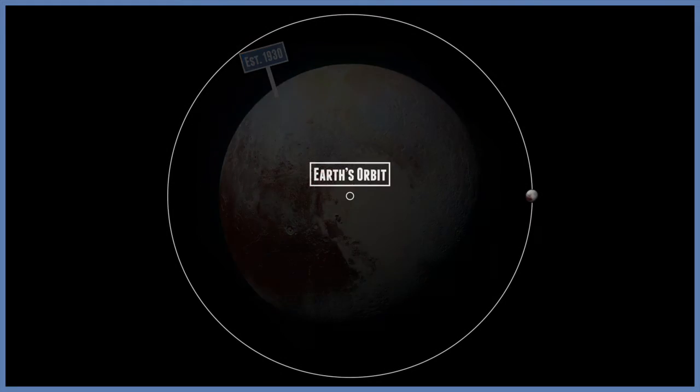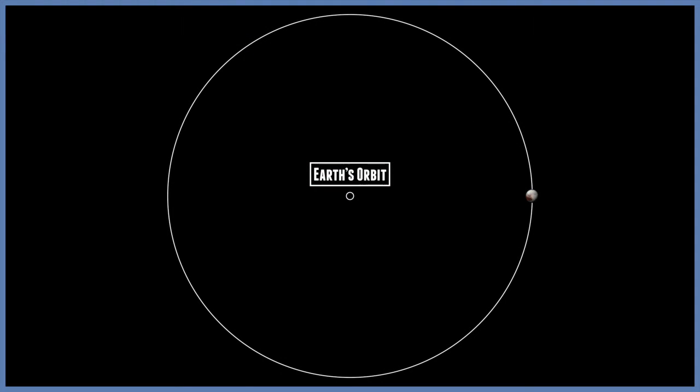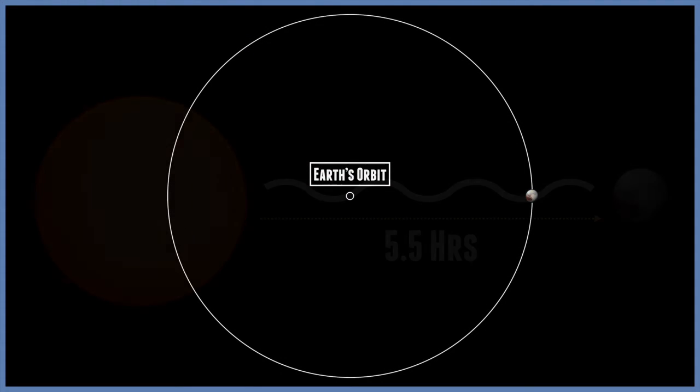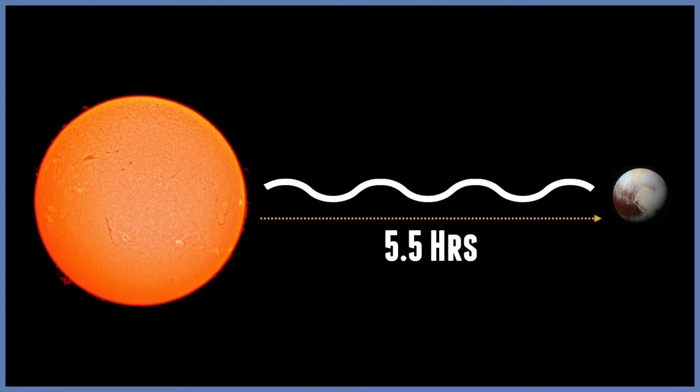Pluto orbits 40 times farther from the Sun than Earth does. This means it takes 5.5 hours for light to reach Pluto and roughly the same time to reach Earth.